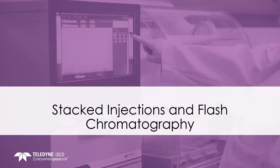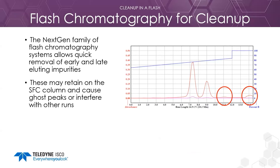Flash chromatography is a quick way to prepare samples for stacked injections. Flash is fast — it removes compounds that might interfere with isocratic SFC runs, compounds that may retain on the SFC column and elute later as ghost peaks or interfere with other runs. Flash chromatography is done very quickly in only a few minutes. Although I used a focused gradient to purify these compounds, it's possible to do the cleanup with just a standard gradient on the flash system without optimization.